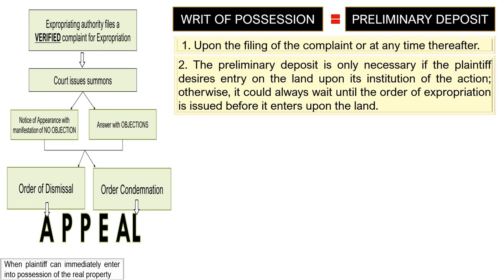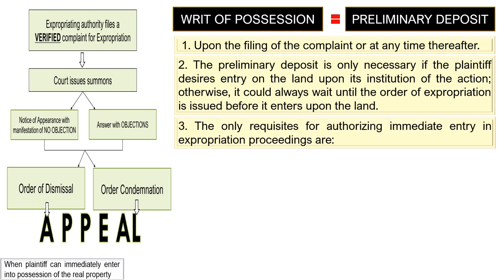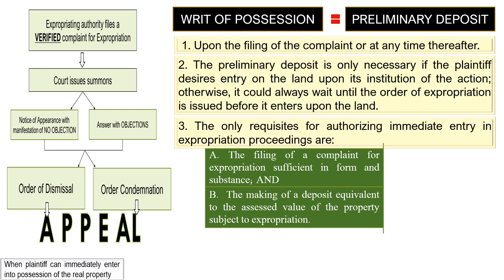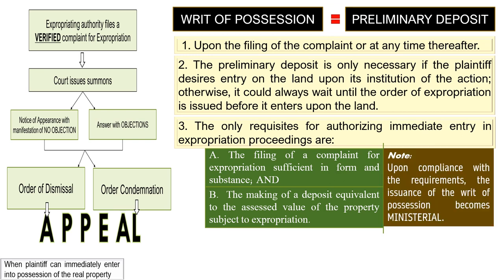The requisites for authorizing immediate entry in expropriation proceedings are: (1) the filing of a complaint for expropriation that is sufficient in form and substance, and (2) the making of a deposit equivalent to the assessed value of the property subject to expropriation. Once these requirements are complied with, the issuance of the writ of possession becomes ministerial. If the judge refuses to comply, the remedy is mandamus under Rule 65.